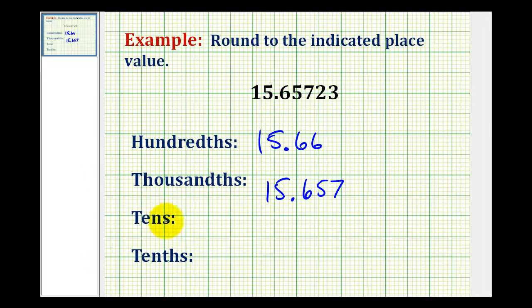Now we need to pay close attention to these last two examples. This is the tens and this is the tenths. So the tens place value is actually to the left of the decimal point right here. So the digit to the right is a five, which means we're going to round up.